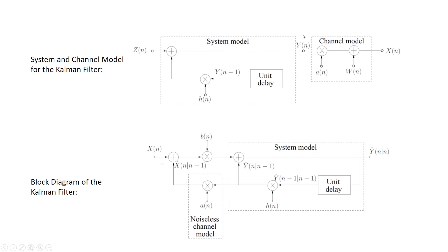Each of the samples of X is constructed by taking the corresponding sample of Y, weighting it with a sequence of known and deterministic coefficients A, and then adding some observation noise W. In this video, instead, we will focus on the operation that the filter itself performs. We will see how the assumptions made in the system and channel model are exploited by the Kalman filter in order to compute recursive LMMC estimates of the process Y based on the observation of the samples of the process X.